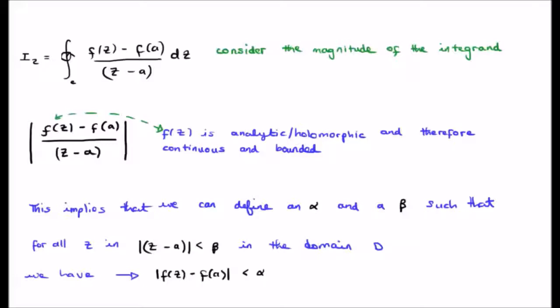Analytic and holomorphic are synonyms. They mean the same thing. Holomorphic is a more modern term for the word analytic. This means that the function f of z is continuous and is bounded. In other words, there is no infinity.